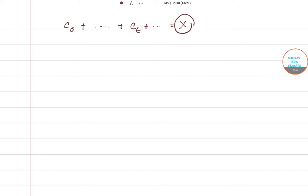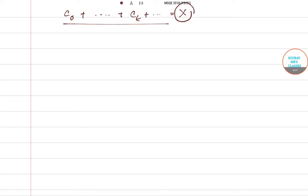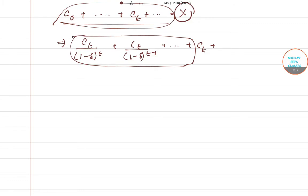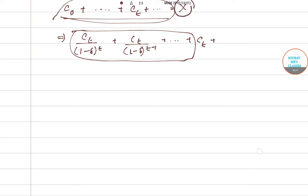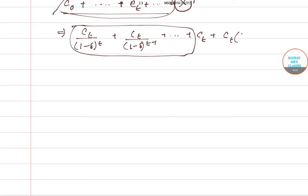The budget equation available to us is c0 + c1 + ... + ct + ... = x, because x is the stock available and these are the consumptions in each time period. We transform the entire equation in terms of present and future values. For the finite portion up to t, we write the sum as ct·(1−δ)^t terms, and for the remaining infinite tail, we write ct·(1−δ) + ct·(1−δ)^2 + ... = x.